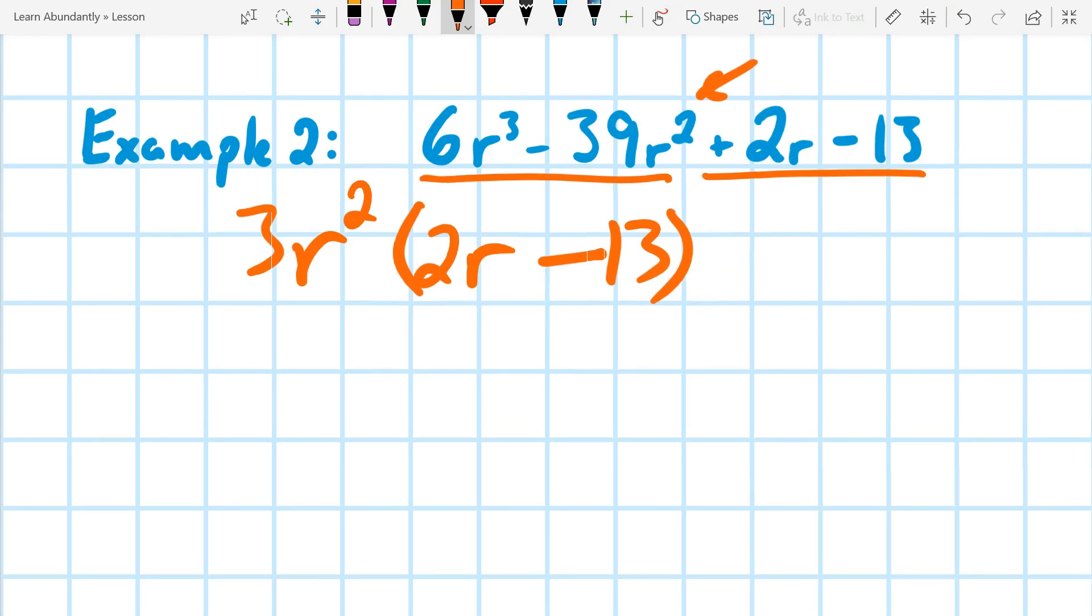When we look at the second one, we don't have an r in both of them, and we can't even take a two out of both of them. It looks like there's nothing we can take out of both of them, but that's not true, actually. There's always one thing that we can take out of everything. They always have a common factor of one.